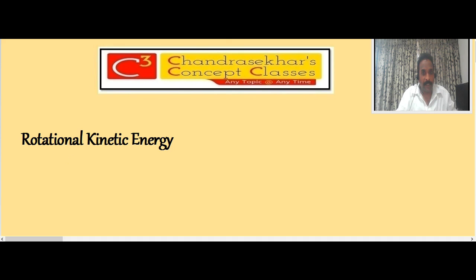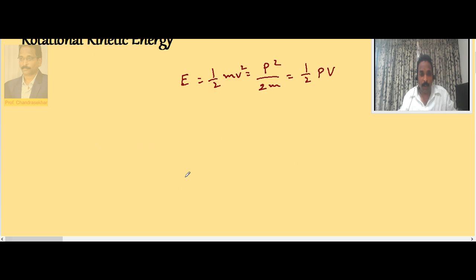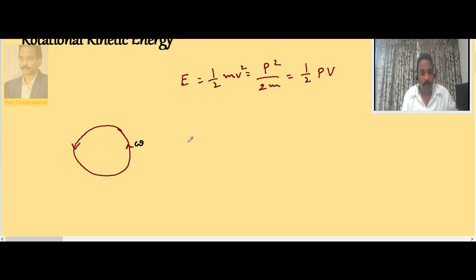Now consider rotational kinetic energy. We know that the linear kinetic energy E is given by half mv squared, or p squared by 2m, or half pv, where p is the linear momentum, m is the mass, and v is the velocity. In the similar way, when a body is rotating about an axis with angular velocity omega, the energy associated with it is called rotational kinetic energy, given by Er equal to half I omega squared. The role of mass in linear motion is now played by moment of inertia, and linear velocity by angular velocity.